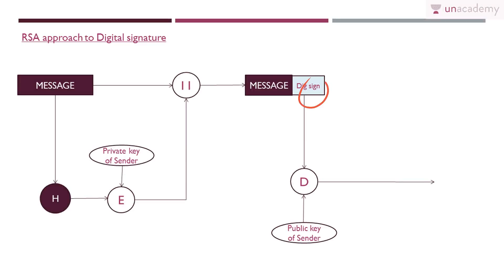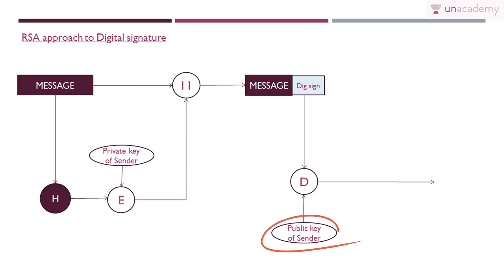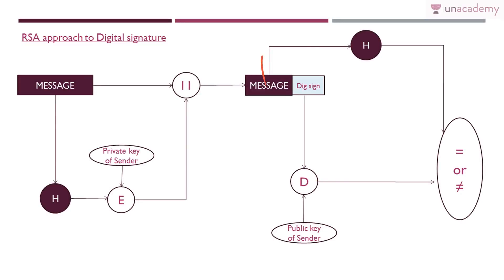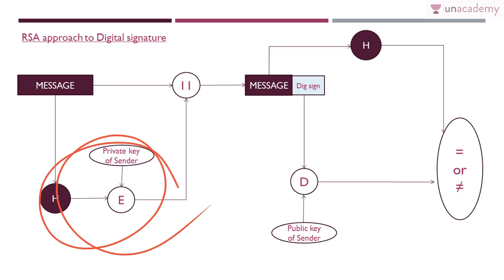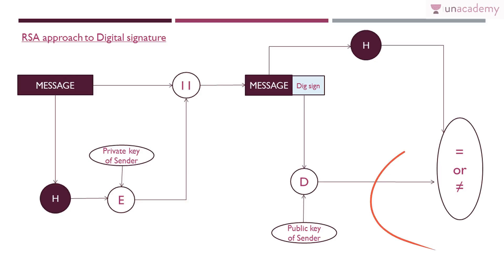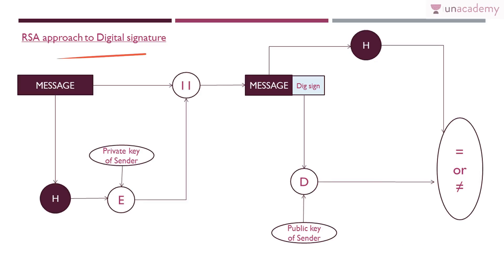At the receiver side, the digital signature is taken and decrypted using the sender's public key — since it was encrypted with the private key. The message is also applied to the same hash function. The decrypted hash and the computed hash are compared: if equal, the signature is verified; if not equal, it is not verified. This gives us a signing algorithm and a verification algorithm. That is the RSA approach.